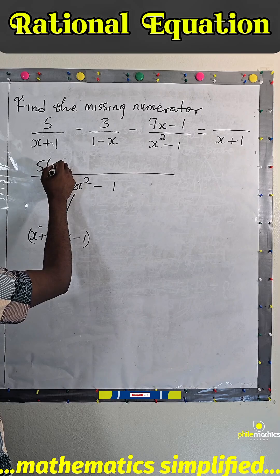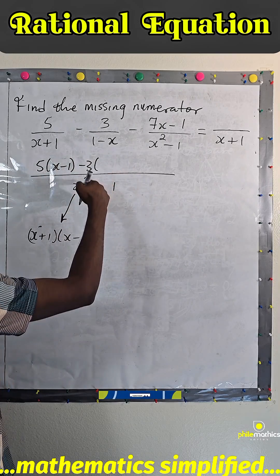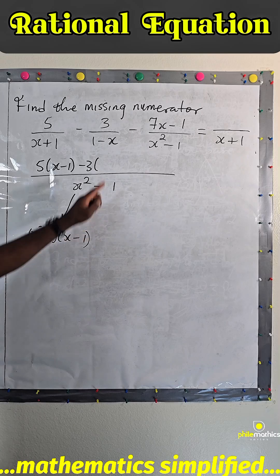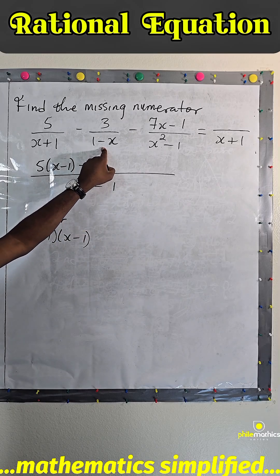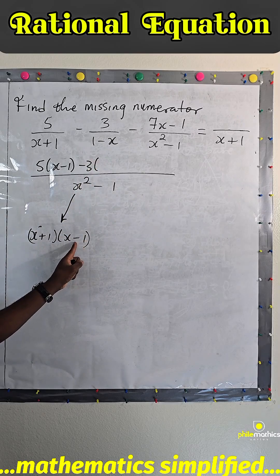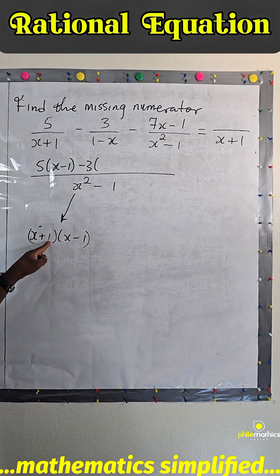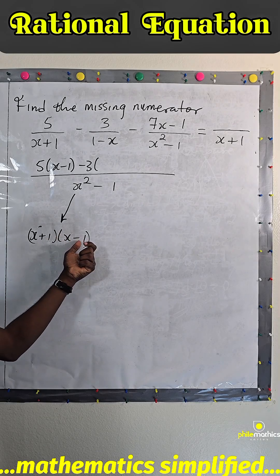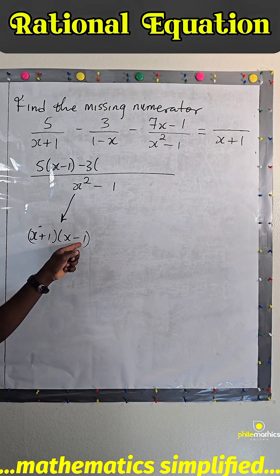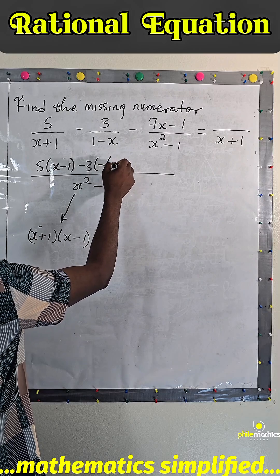five, 5x - 1, minus three, this into this. Now this is 1 - x, so into this, this is different from 1 - x, so we are going to have minus x + 1, because if we factorize minus here it will become 1 - x.